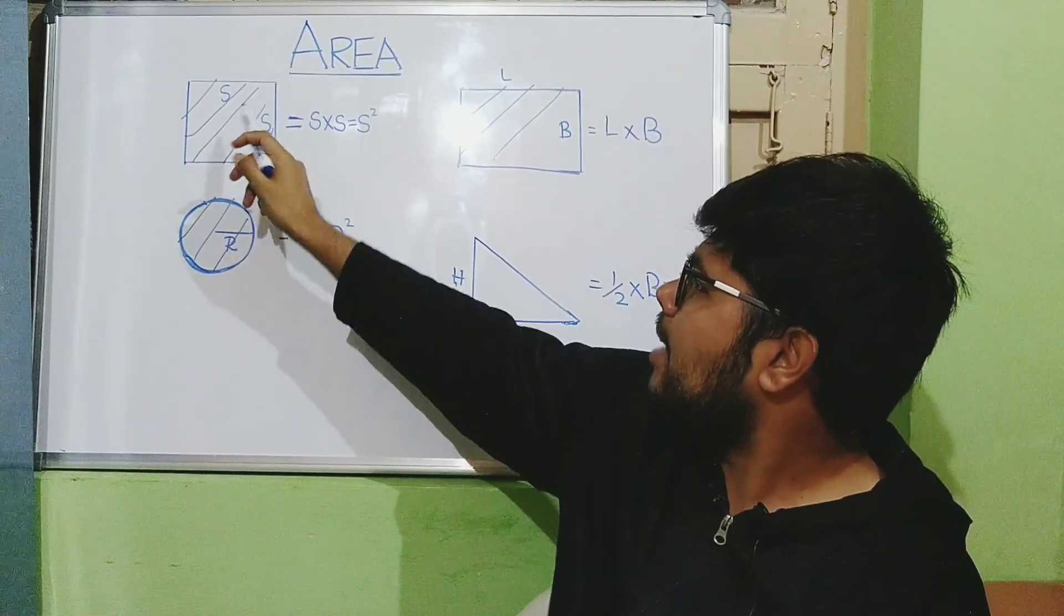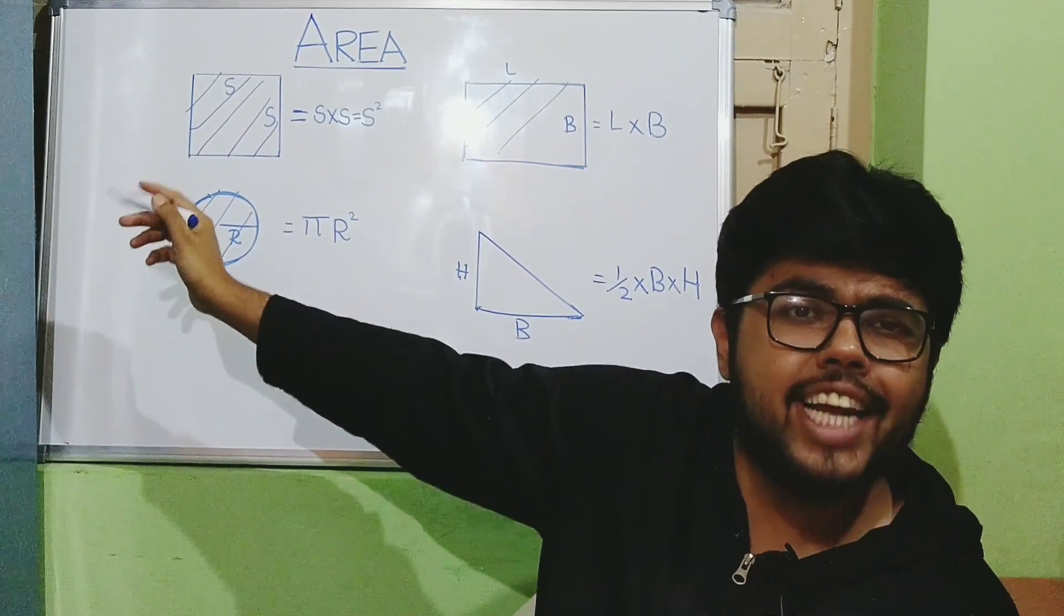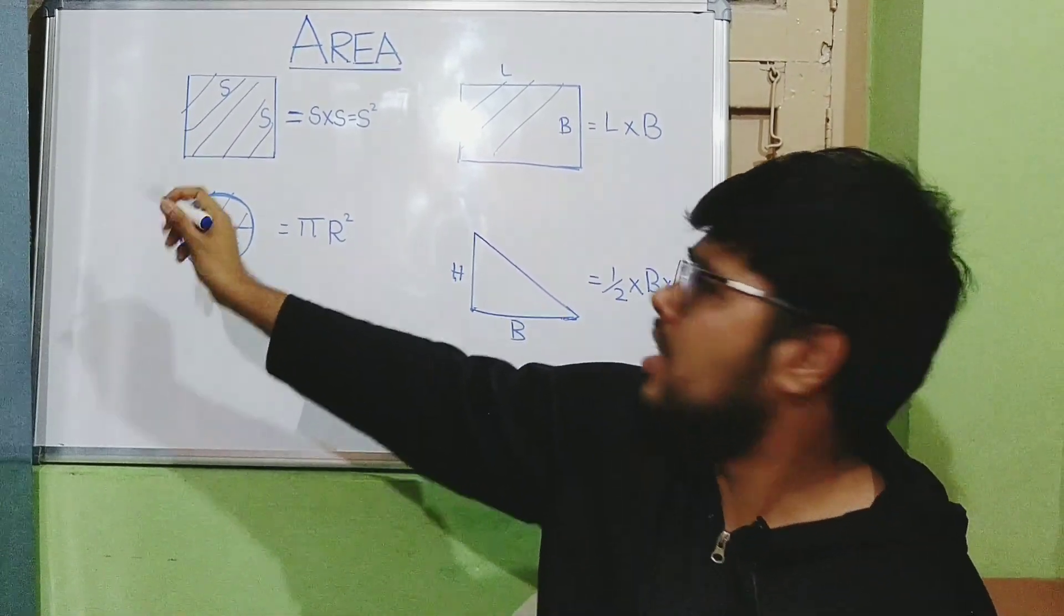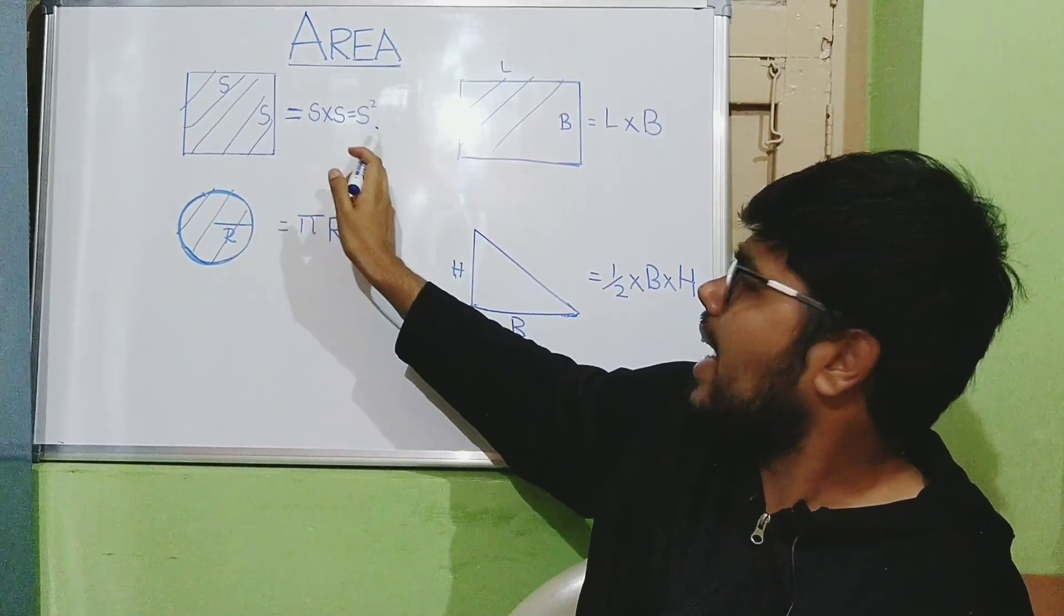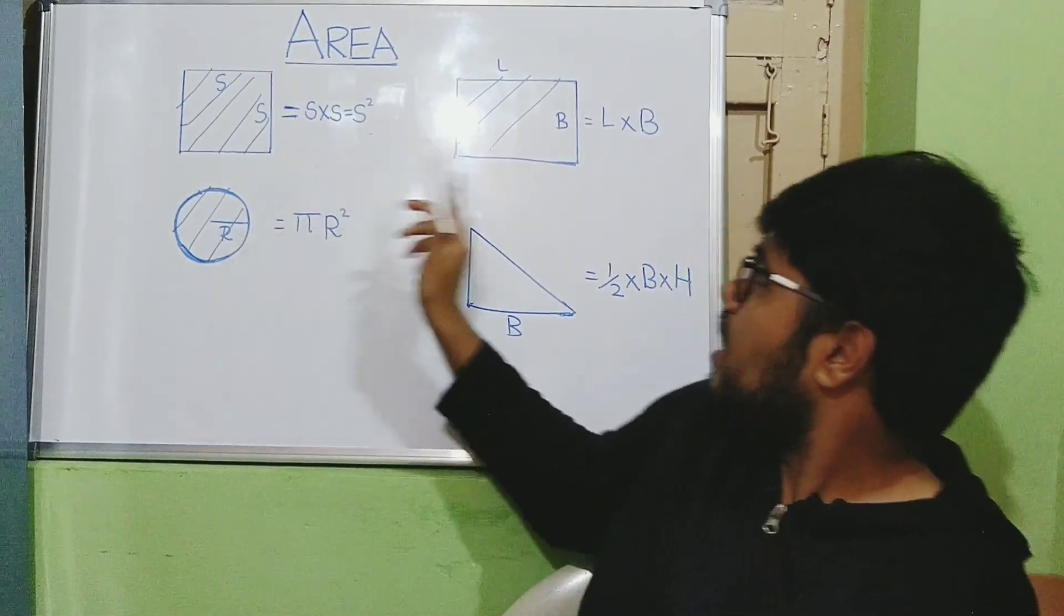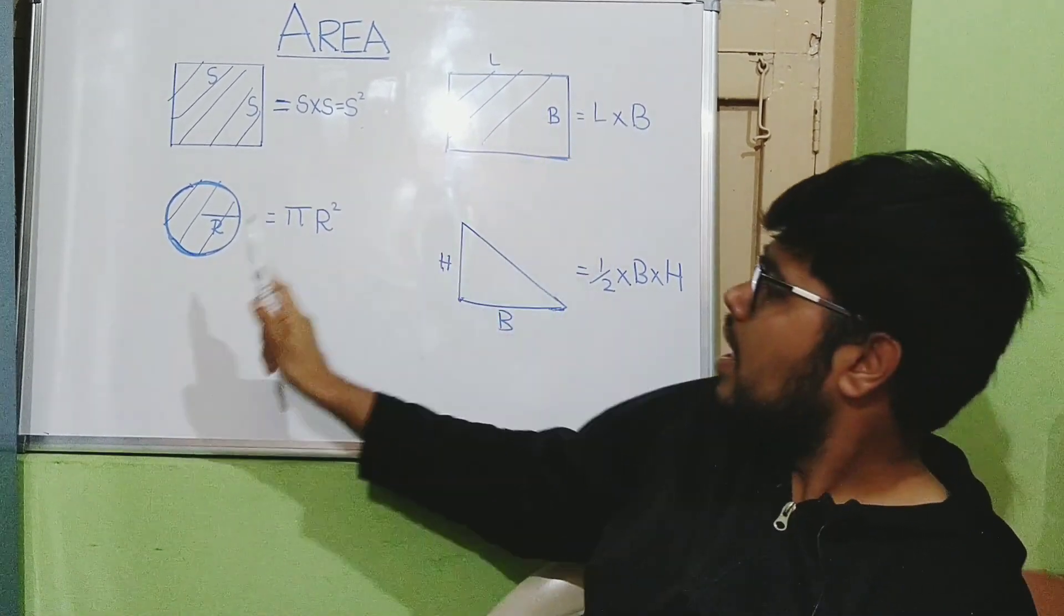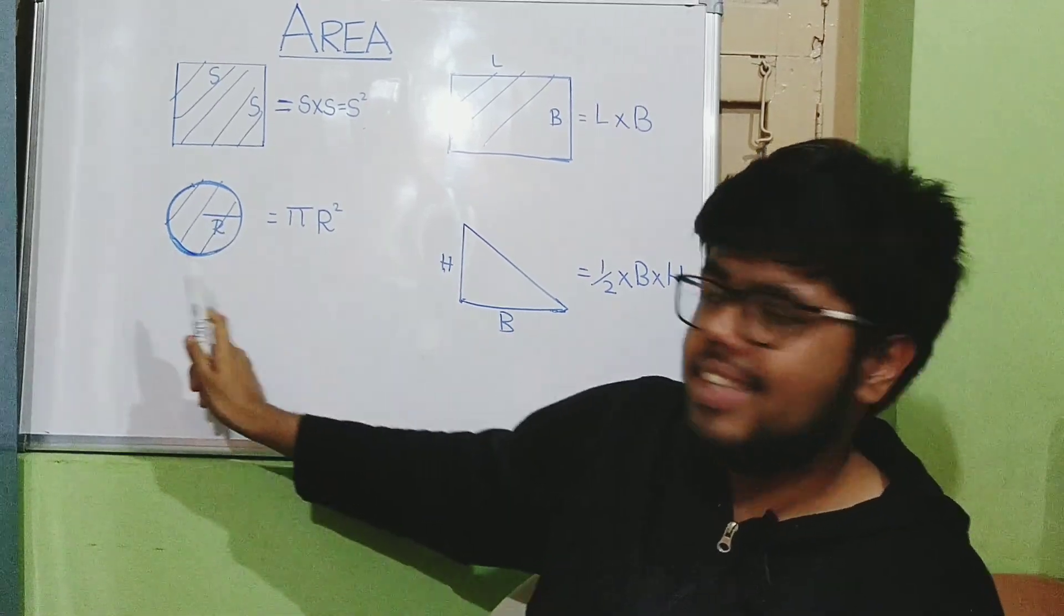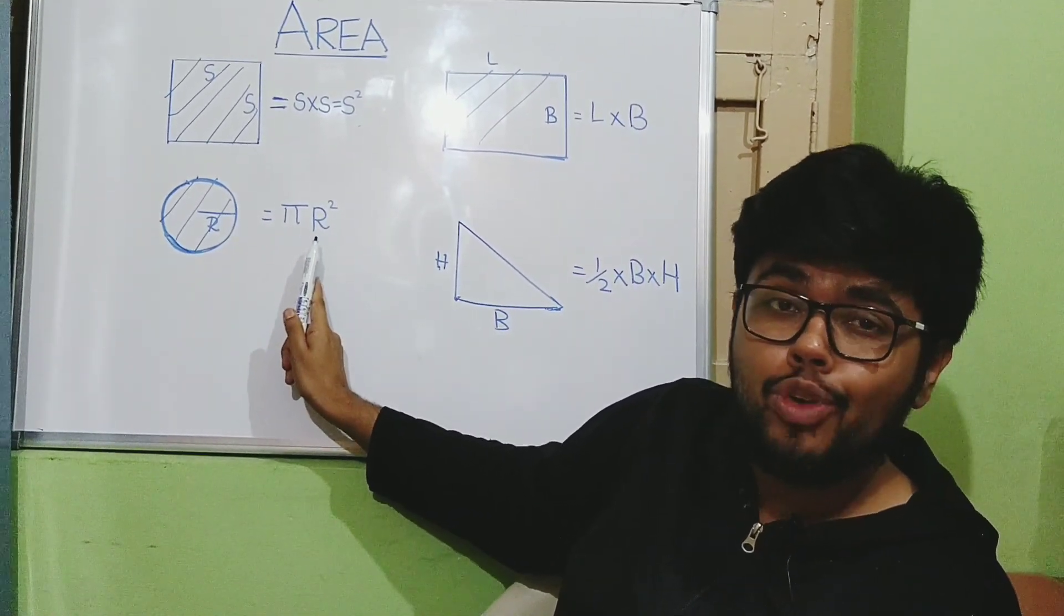Now, coming back. See this diagram. What is the area of square? You might know it. That is, side square. You are multiplying two sides. One dimension into one more dimension. So, side into side, side square. And, coming to the rectangle, the length into breadth, L into B. Coming to circle, see here? Pi R square. R is twice. That means you are multiplying two dimensions.